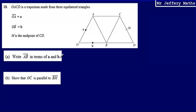I'm asked first of all to write AB in terms of a and b. So how can I get from point A to point B? When working with algebraic vectors, the only way I can get from one place to another is by using known routes. I can't go directly from A to B because that vector hasn't been described algebraically. However, I can get from A to B by going from A to O and then O to B.